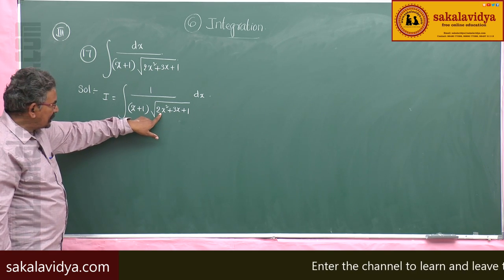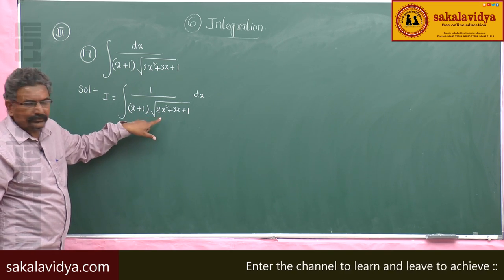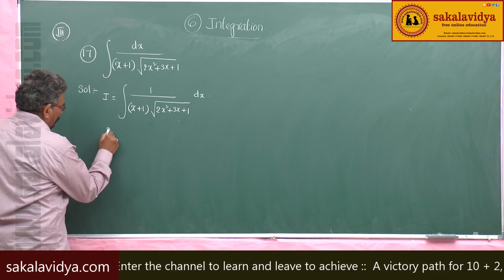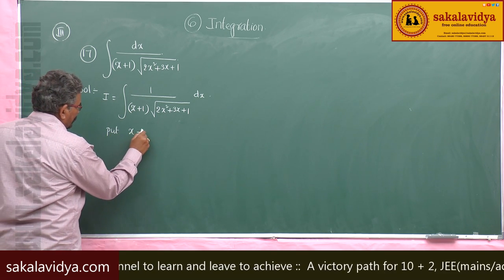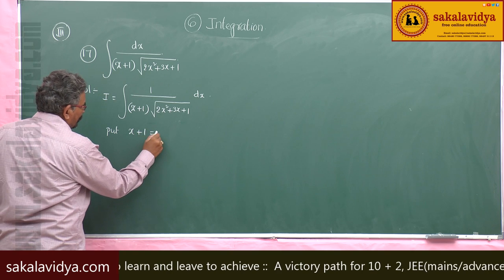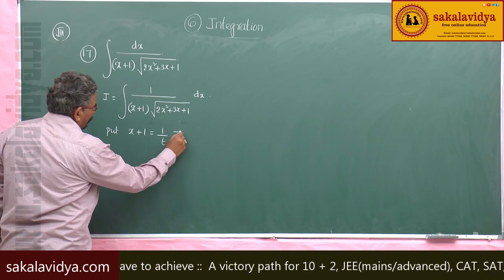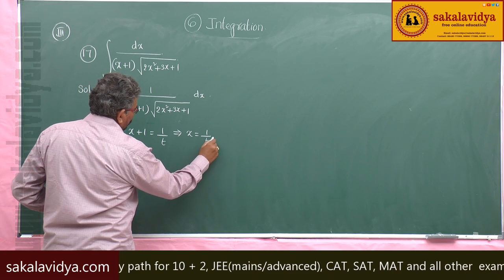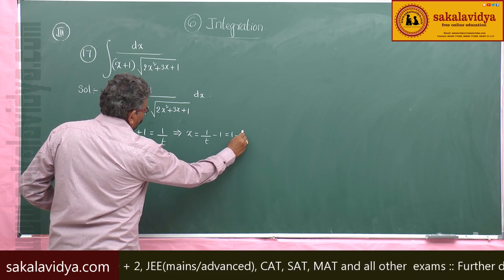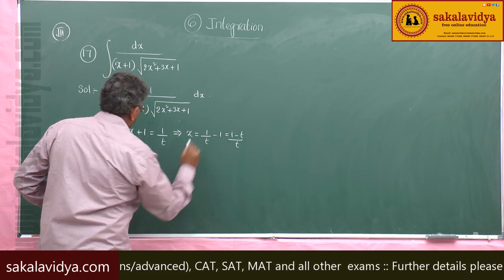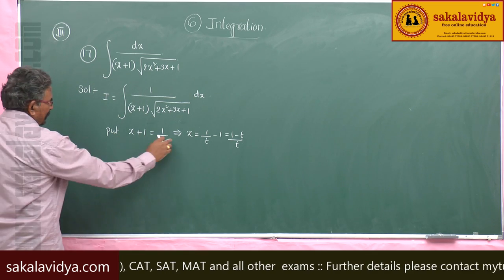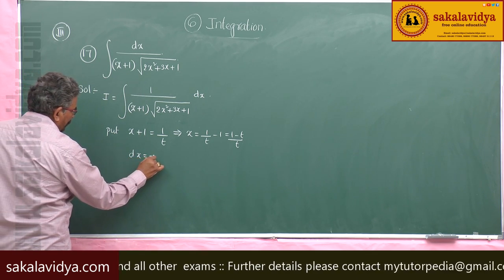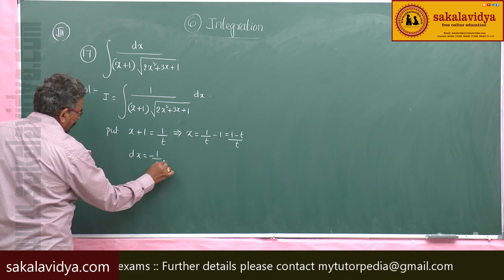Since this is a quadratic factor, let x plus 1 equal to 1 by t. So put x plus 1 equals 1 by t. We get x equals 1 by t minus 1, which equals (1 minus t) by t. Differentiating with respect to t, dx becomes minus 1 by t squared dt.